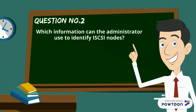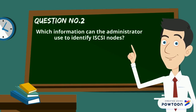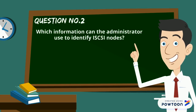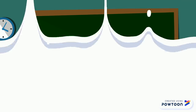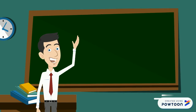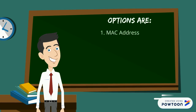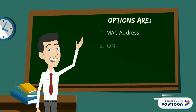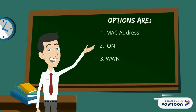Now here is the next question: which information can the administrator use to identify iSCSI nodes? Your options are MAC address, IQN, WWN, and LUN ID.